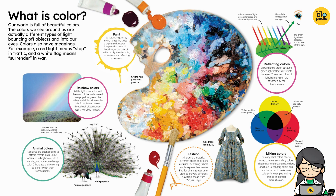Primary colors can be mixed to make secondary colors. The primary colors are red, yellow, and blue. Secondary colors can also be mixed to make new colors — for example, mixing orange and green makes brown. Look forward to more scientific info on the Encyclopedia channel!